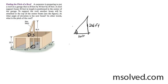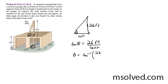So this is going to be simply the tangent — we can use the tangent here. Tangent of theta is equal to 26 feet over 10 feet. So theta is equal to the inverse tangent of 26 divided by 10, and I end up with 68.9624, which roughly is just equal to 69 degrees. That's it.